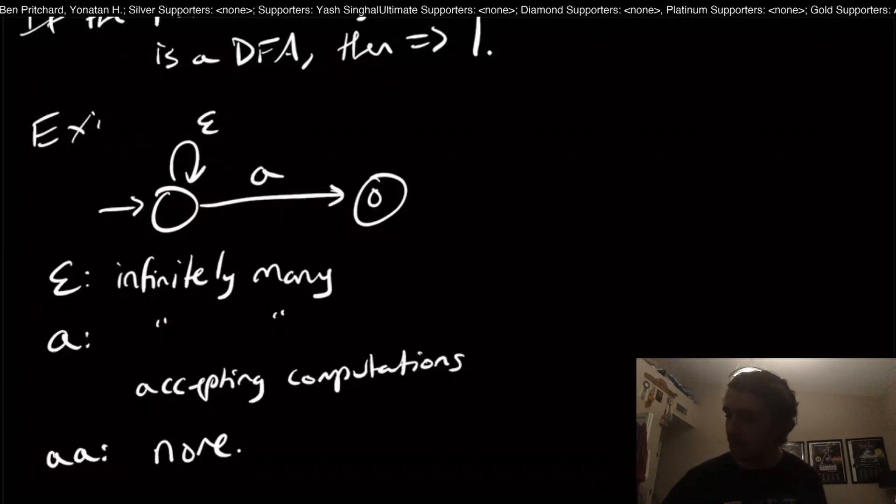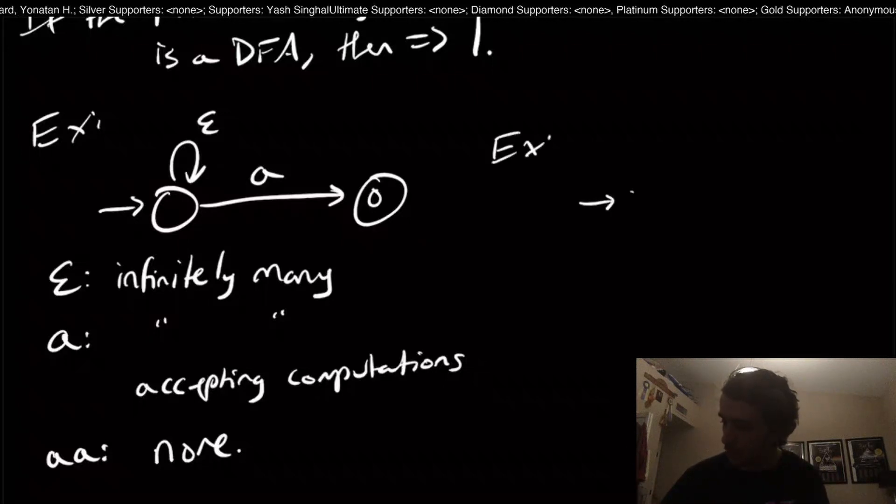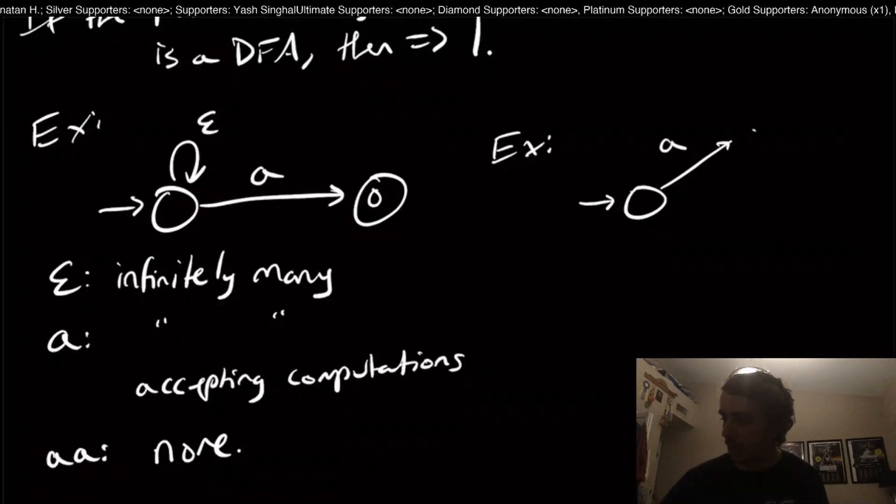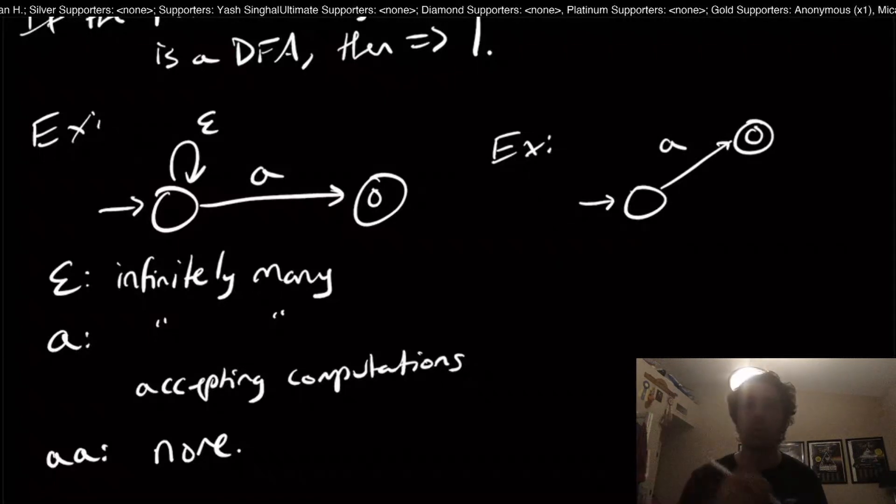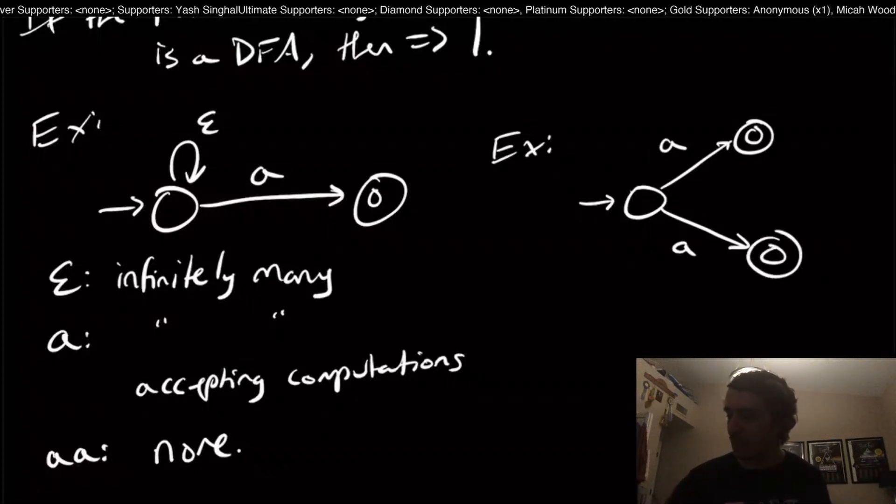We can easily give an example where we get, let's say, two. Here's another example where I have a start state right here. I'm going to make use of the fact that we can have multiple transitions on the same symbol. Let's say we have something like this.